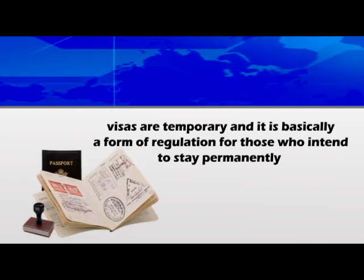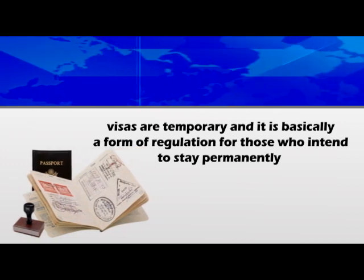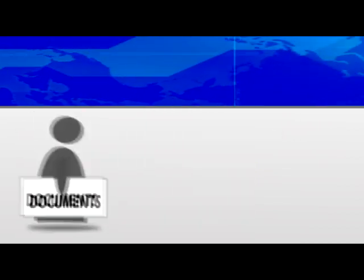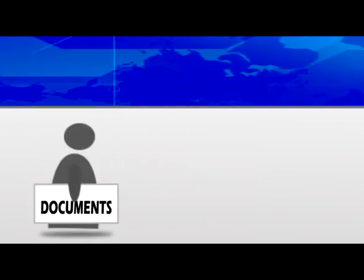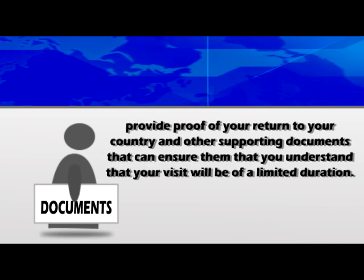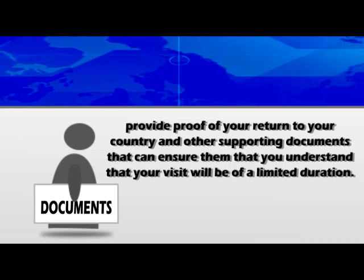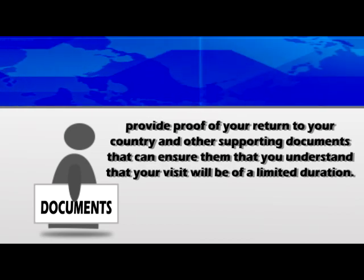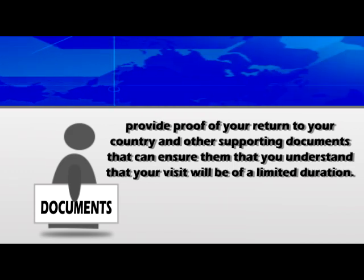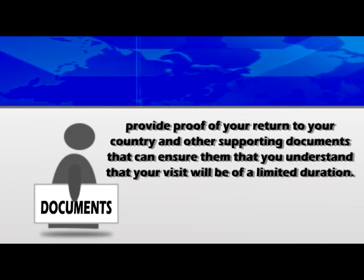In knowing how to apply for a visa, you must remember that visas are temporary. It is basically a form of regulation for those who intend to stay permanently, which will then require a citizenship application. So it is best to assure the embassy of the period of your stay, provide proof of your return to your country, and other supporting documents that can ensure them that you understand that your visit will be of a limited duration. Bon voyage!